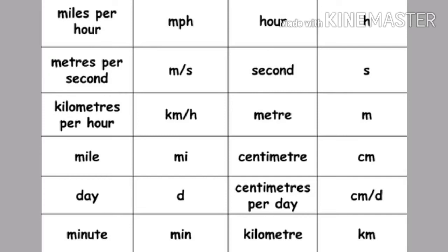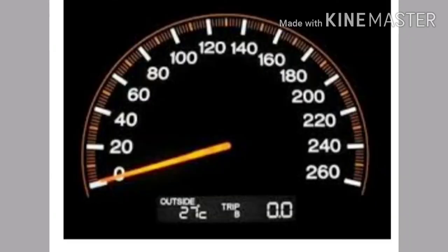The relationship between centimeter per second and meter per second: one meter per second is equal to 100 centimeter per second.